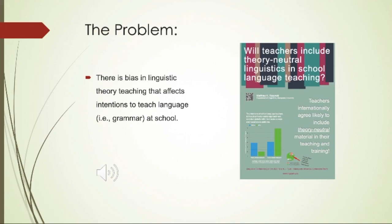The problem being researched here is a bias in linguistic theory teaching that affects intentions to teach language at school. This refers to secondary school and any additional language teaching or English L1 teaching — any point at which some language is taught — and the intentions of teachers to incorporate linguistic theory in their teaching is what's being measured and researched here.